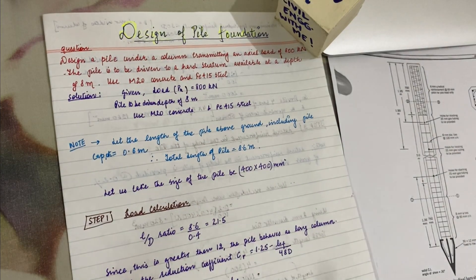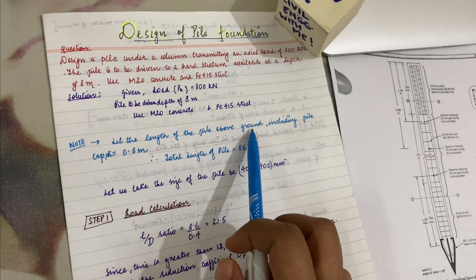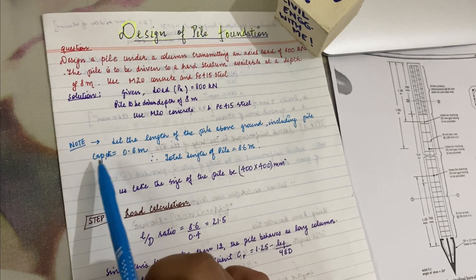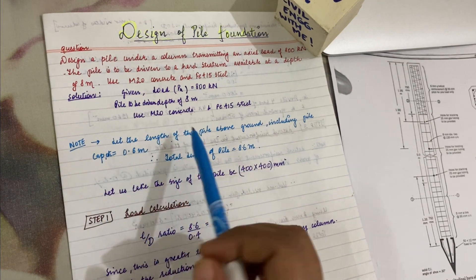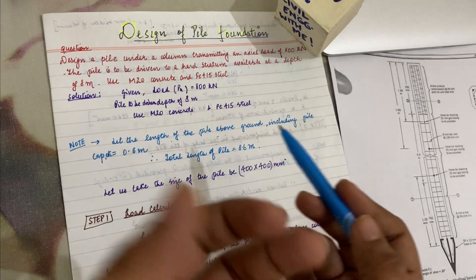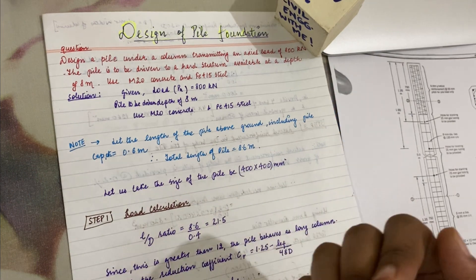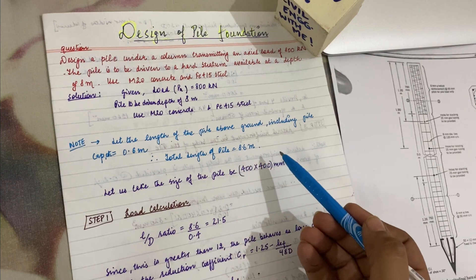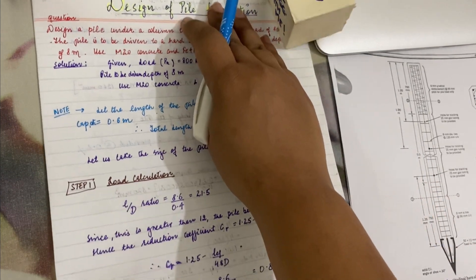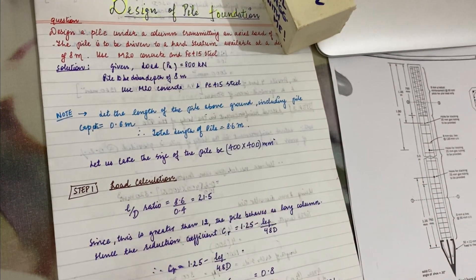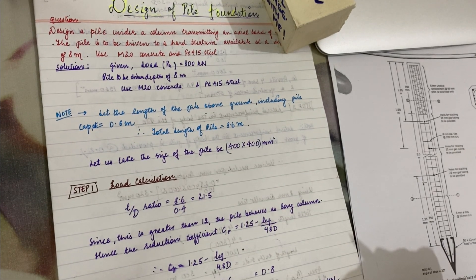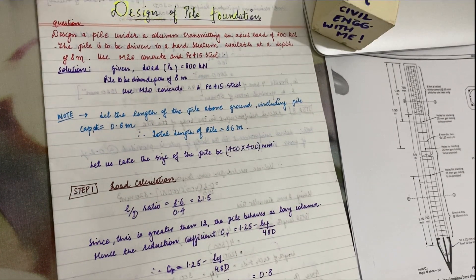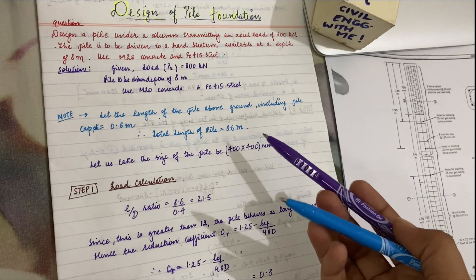We have taken the length of pile above the ground including the pile cap as around 0.6 meters — 600 mm projected upward. So total length of pile will be taken as 8.6 meters. Now when we proceed with design parameters, let us take the size of pile as 400 mm × 400 mm.